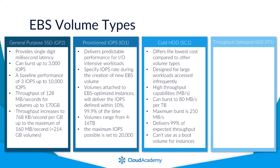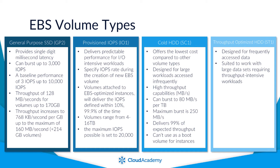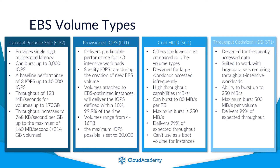For Throughput Optimised HDD volumes, they are designed for frequently accessed data and are ideally suited for large datasets requiring throughput-intensive workloads, such as data streaming, big data, and log processing. They have the ability to burst up to 250 megabytes per second, with a maximum burst of 500 megabytes per second per volume. They will deliver the expected throughput 99% of the time over a given year. And again, due to the nature of these volumes, it's not possible to use these as boot volumes for your instances.